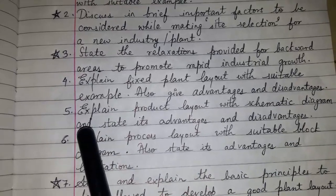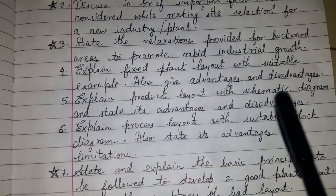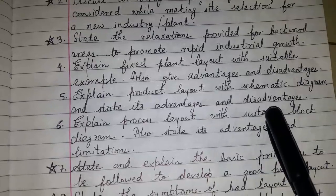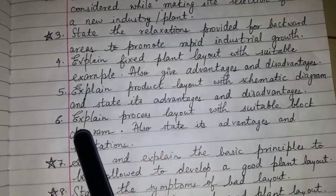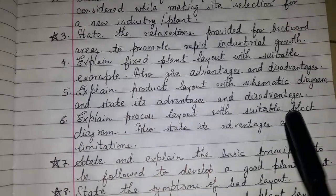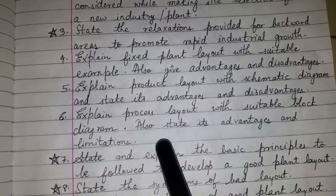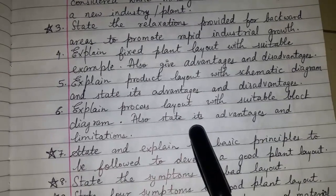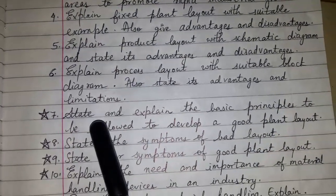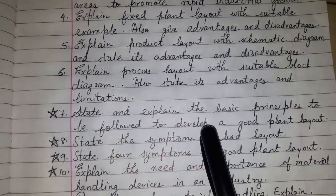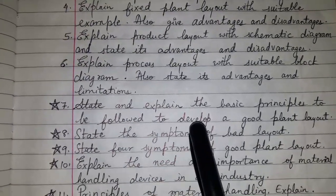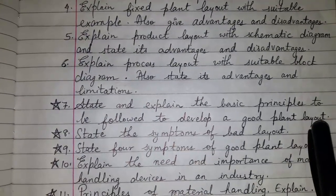Explain fixed plant layout with a suitable example; also give advantages and disadvantages. Explain product layout with a schematic diagram and state its advantages and disadvantages. Explain process layout with a suitable block diagram and also state its advantages and limitations.